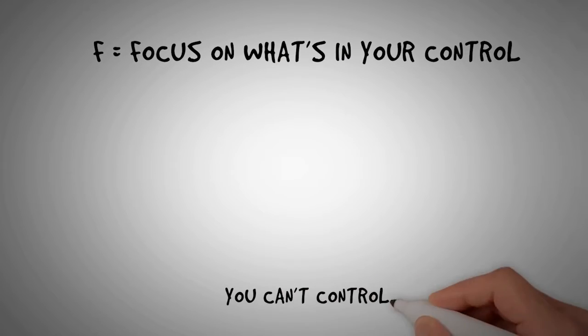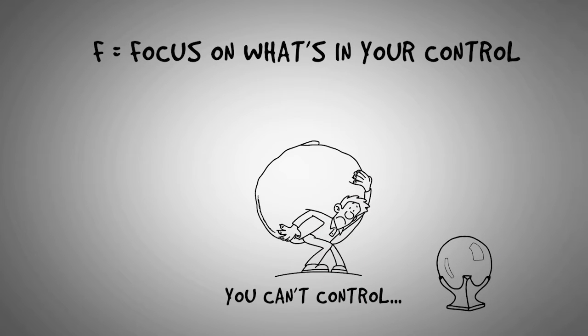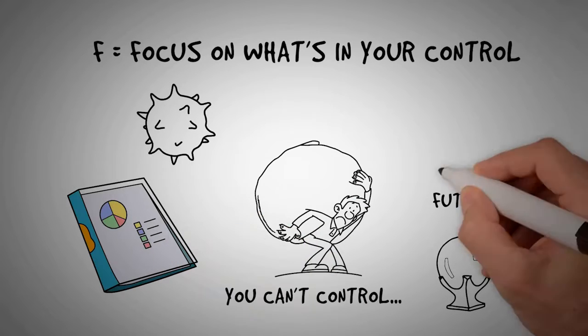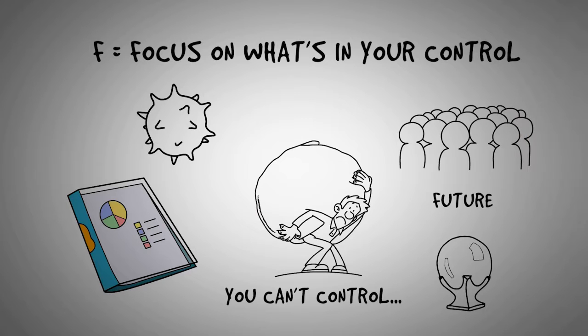F is for focus on what's in your control. You can't control what happens in the future. You can't control coronavirus itself or the world economy or what other people do. And you can't magically control your thoughts and feelings.